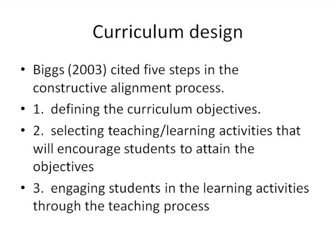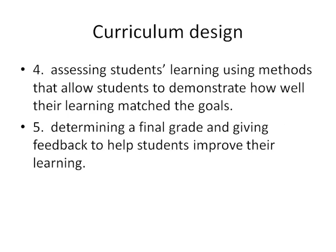Biggs cited five main steps in the constructive alignment process. One: defining the curriculum's objectives. Two: selecting teaching and learning activities that will encourage students to attain the objectives. Three: engaging students in the learning activities through the teaching process. Four: assessing students' learning outcomes using methods that allow them to demonstrate how well their learning outcomes match the goals of the course. And five: determining a final grade and giving feedback to help students improve their learning.